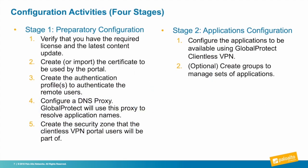The configuration activities are divided into four stages. The first stage is the preparatory configuration: verify the required license and latest content update, create or import the portal certificate, create the authentication profile, configure the DNS proxy object for resolving application names, and create the security zone that clientless VPN portal users will be part of. The second stage is application configuration, where we configure application shortcuts available on the portal and optionally create application groups for easier management.